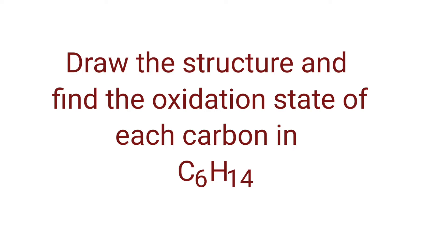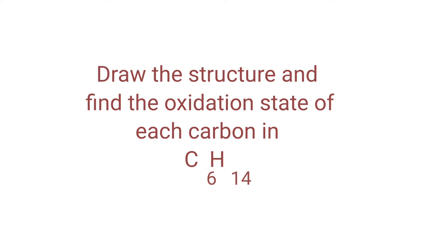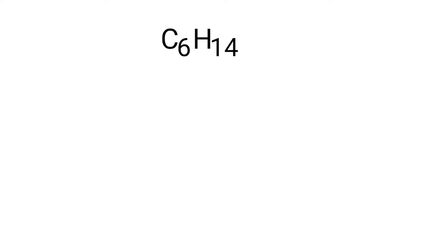Draw the structure and find the oxidation state of each carbon in hexane. Hexane is a neutral compound with an overall oxidation number of 0. Therefore, we know that the sum of the oxidation numbers of all atoms is equal to 0. Now you can draw the structure of hexane.